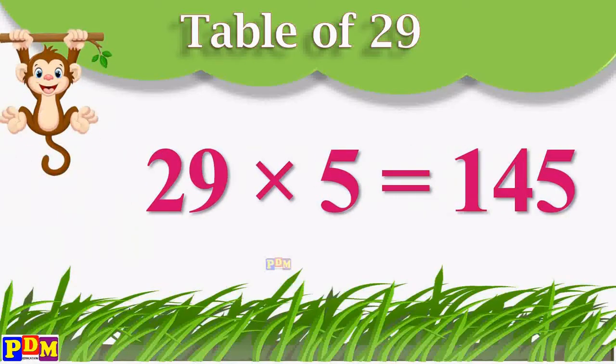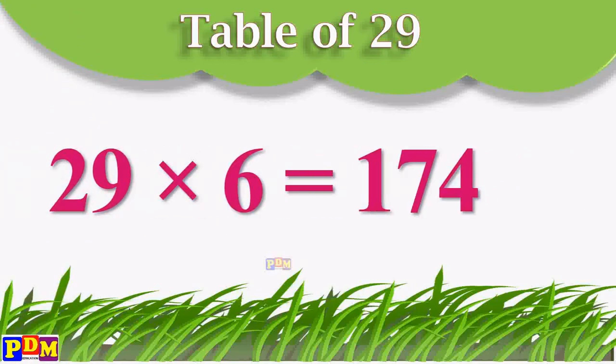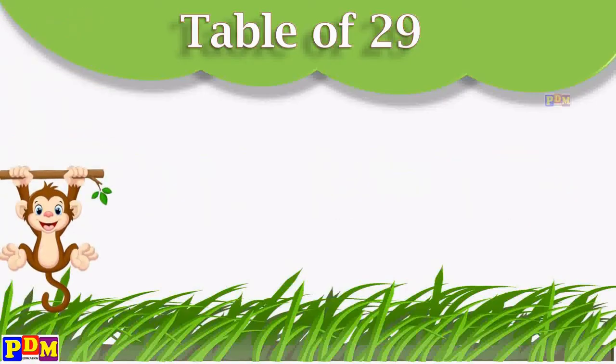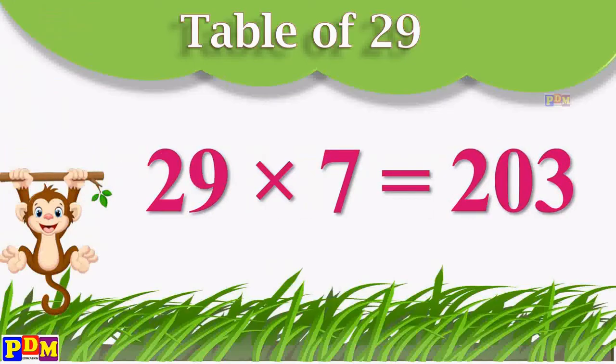29 fives are 145. 29 sixes are 174. 29 sevens are 203.